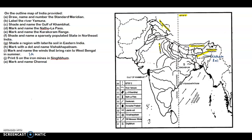This is Visakhapatnam. Mark and name the winds that bring rain to West Bengal in summer — southwest monsoon winds are the winds that bring rain to West Bengal, so these arrows denote that. Then print S on the iron mines in Singhbhum — this is S. Mark and name Chennai — as you know this part is Tamil Nadu and here it is Kerala. Chennai is here.